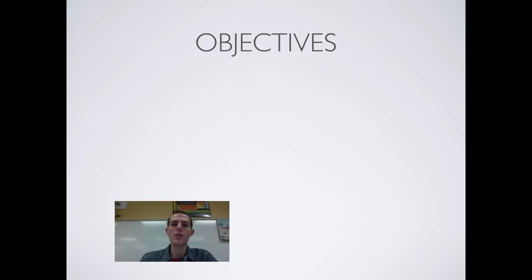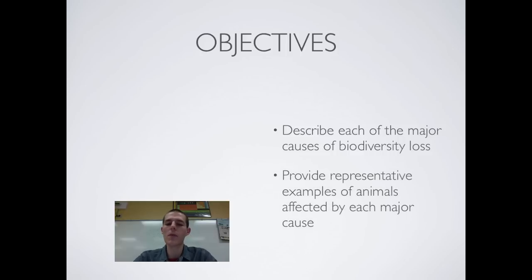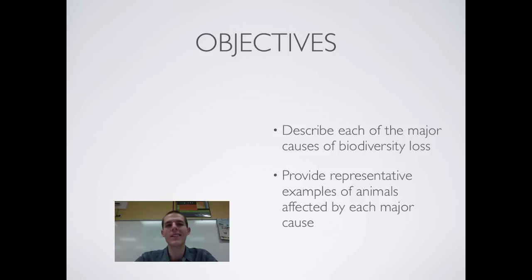By the end of this video, you should be able to describe each of the major causes of biodiversity loss and provide representative examples of animals affected by each major cause. The major topic for the day is going to be the things that cause declines in biodiversity.